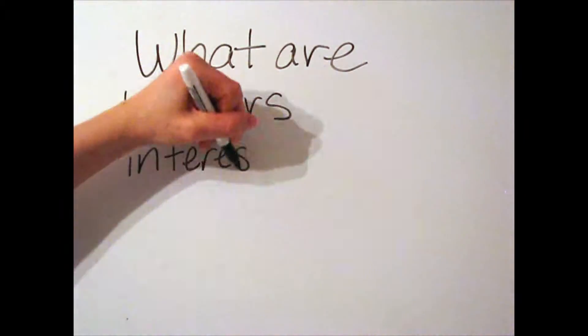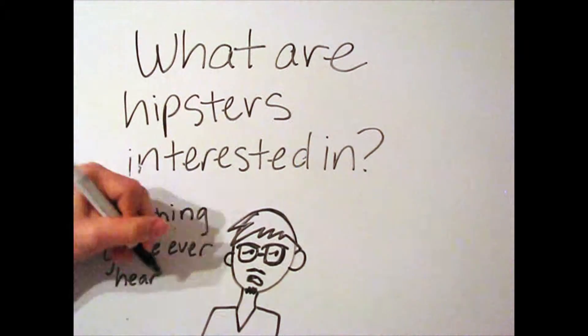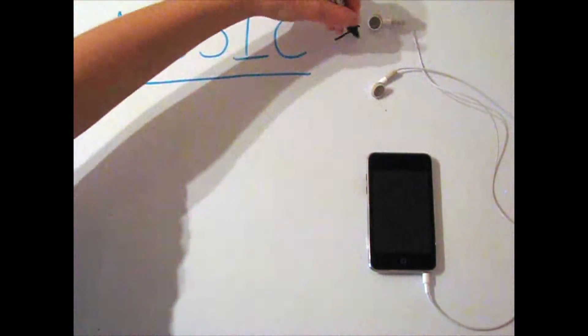So what sort of things do hipsters like? Generally, they like anything that's obscure or classified as indie. They actually have a pretty broad range in their taste of music.